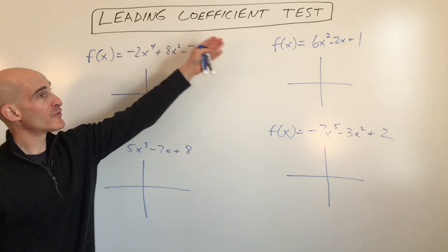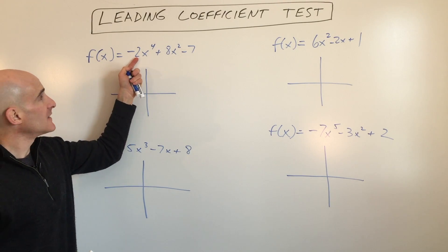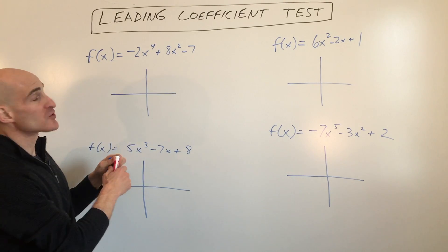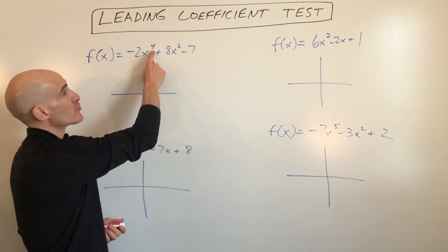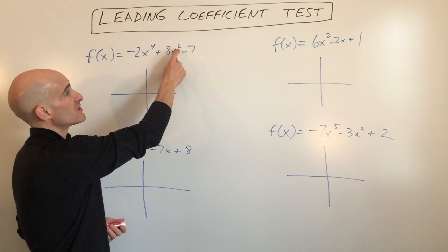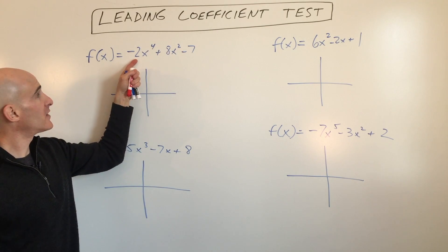So the leading coefficient tells us about the end behavior. The leading coefficient is the one that leads off the polynomial when it's written in standard form, which is the descending order of the degrees of the terms—fourth degree, second degree, constant. It's going in descending order. The leading coefficient is the one in front.